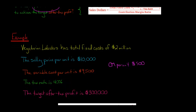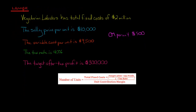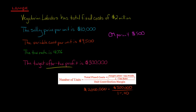Now we plug these numbers into our formula to figure out how many units they need to sell to get an after-tax profit of $300,000. We have $2 million in total fixed costs, plus the target profit of $300,000 divided by 1 minus 0.40 — that gives us $500,000. We divide the whole numerator by the unit contribution margin of $500, which is just $10,000 minus $9,500. So $300,000 divided by 0.6 equals $500,000.